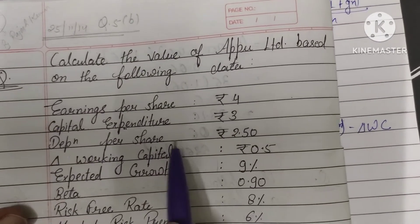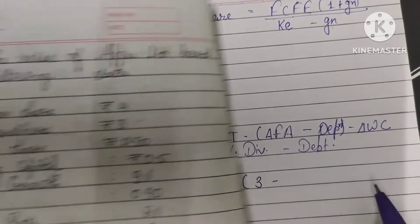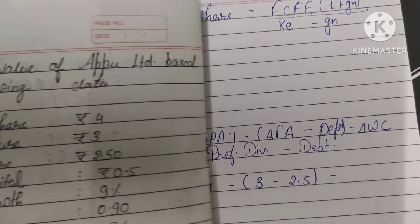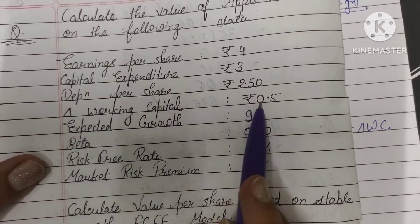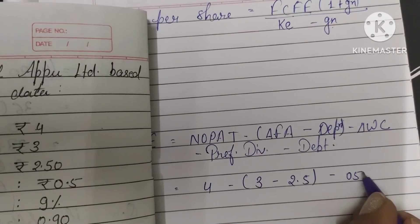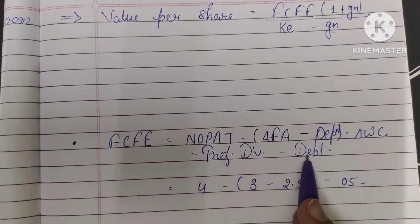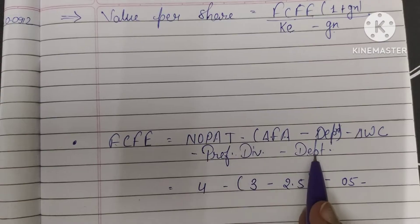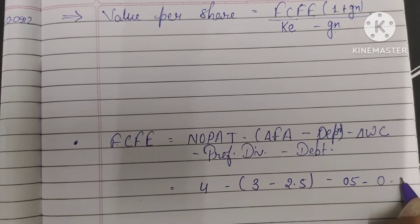Minus depreciation, which is given as 2.5. Then minus change in working capital, which is already given as 0.5. After this, preference dividend and debt repayment (debenture) are not given in the question, so both will be taken as 0.